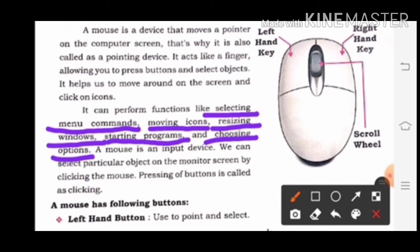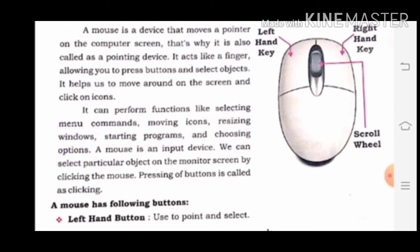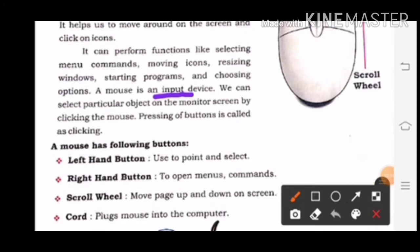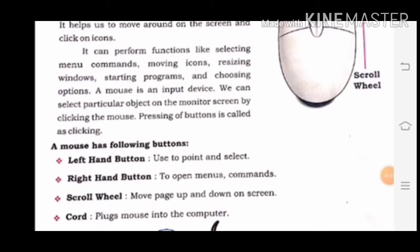तो ये सारे computer mouse के functions हैं — selecting menu commands, moving icons, resizing windows, starting programs, and choosing options. Mouse एक input device है। We can select particular objects on the monitor screen by clicking the mouse. Monitor की screen पर हम mouse की clicking से objects और information को select कर सकते हैं।